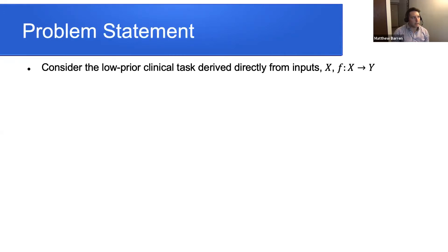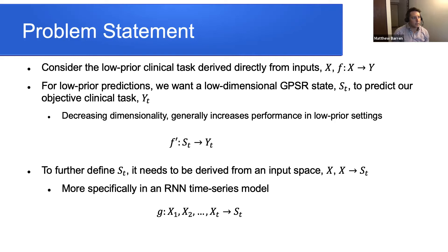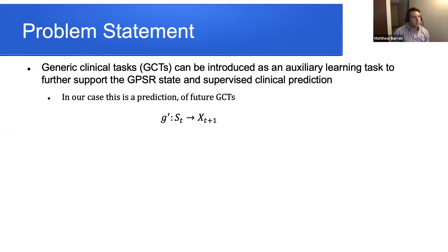For the problem statement: we consider some function F that learns a predictive low prior clinical task Y from a set of inputs. For low prior predictors, we want a low-dimensional representation to reduce predictors and improve performance. So we learn a low-dimensional representation S(T), where Y(T) is a function of S(T). S(T) is derived from the input space and, since we're working with a time series model, it's defined based on past observations. We then consider an auxiliary learning task — generic clinical tasks — to further support learning of the general patient state representation for our supervised predictive task.